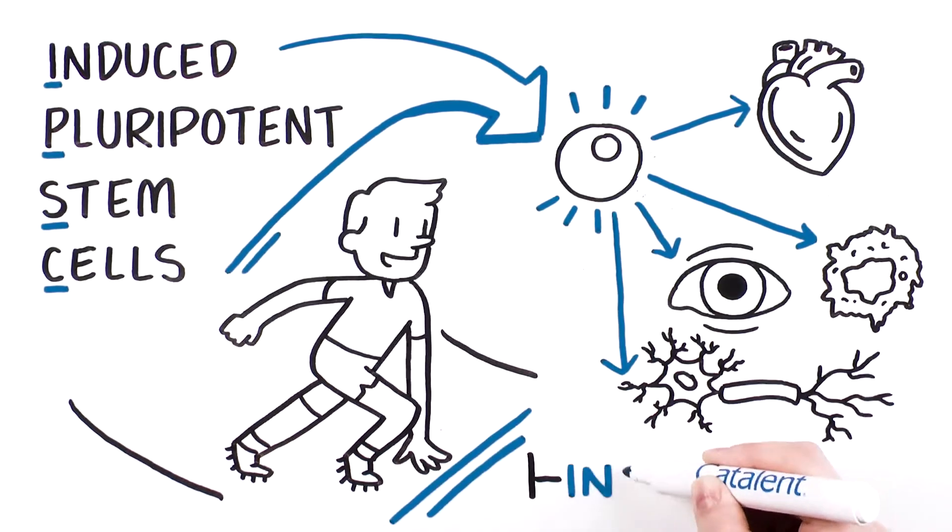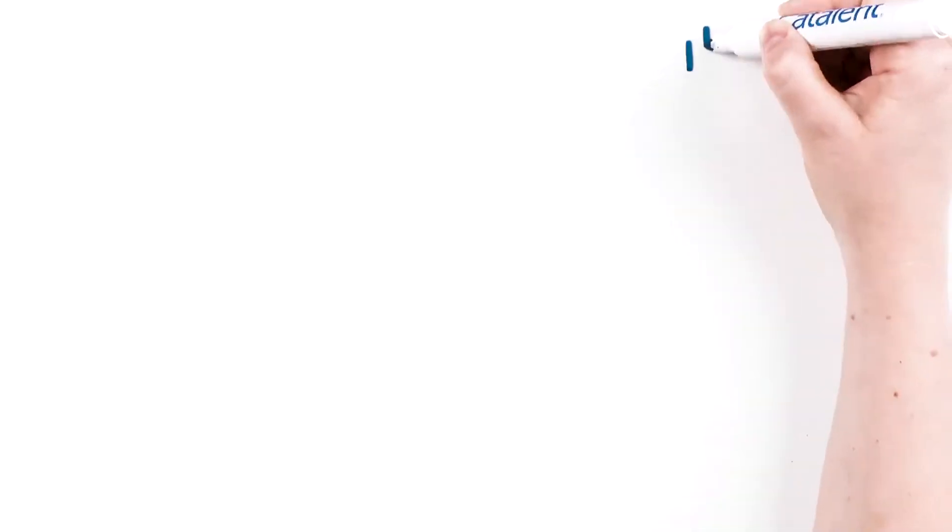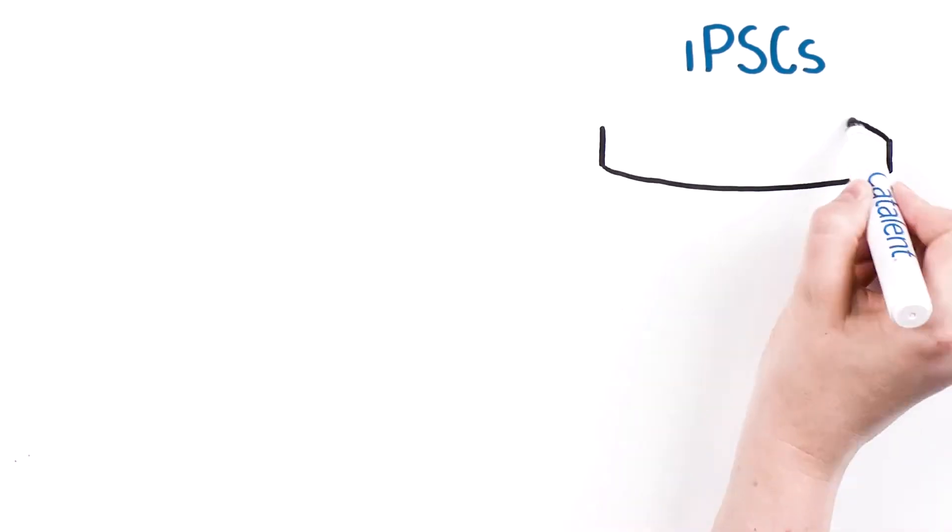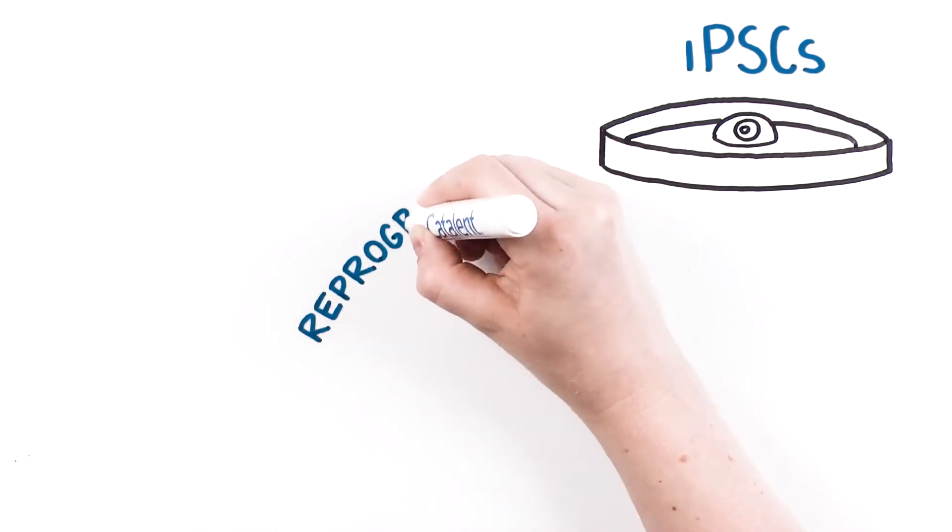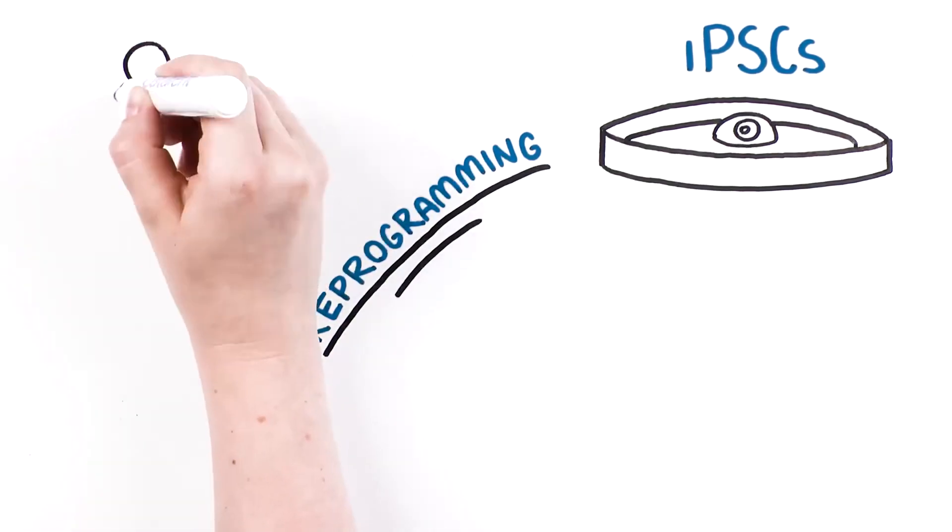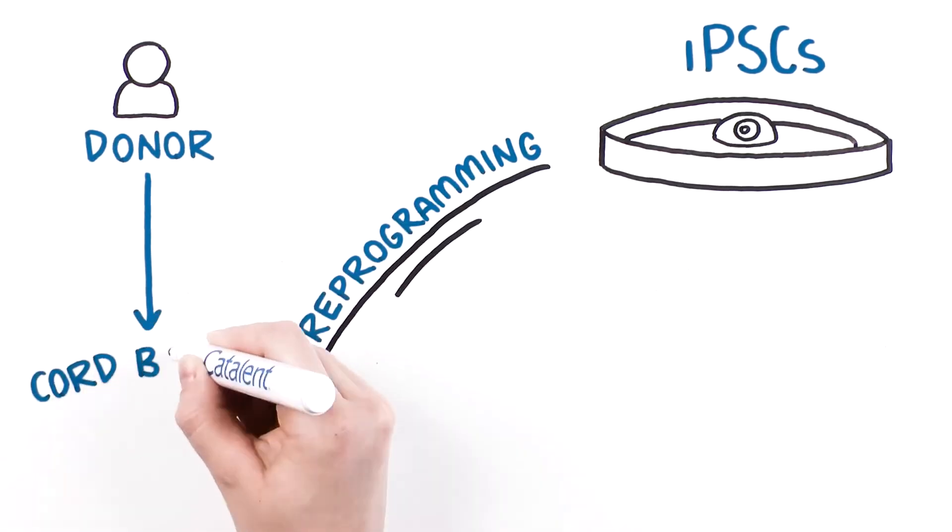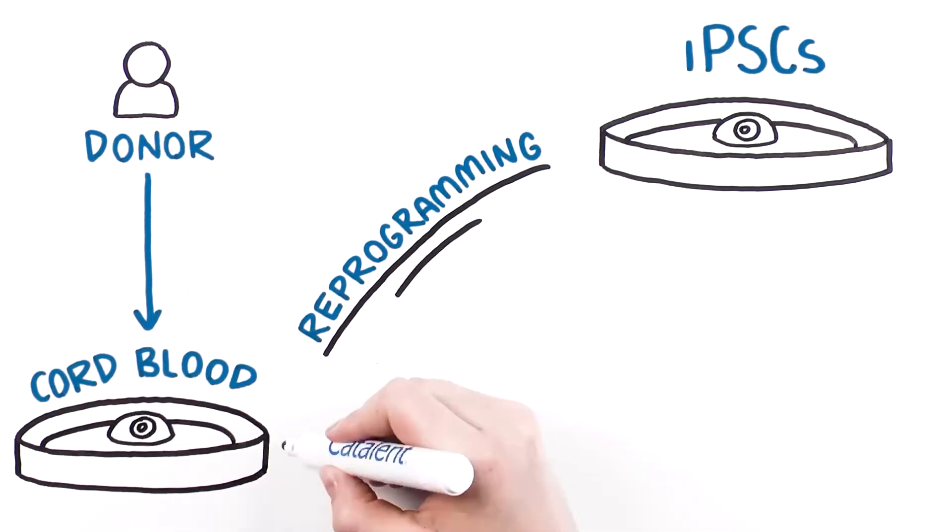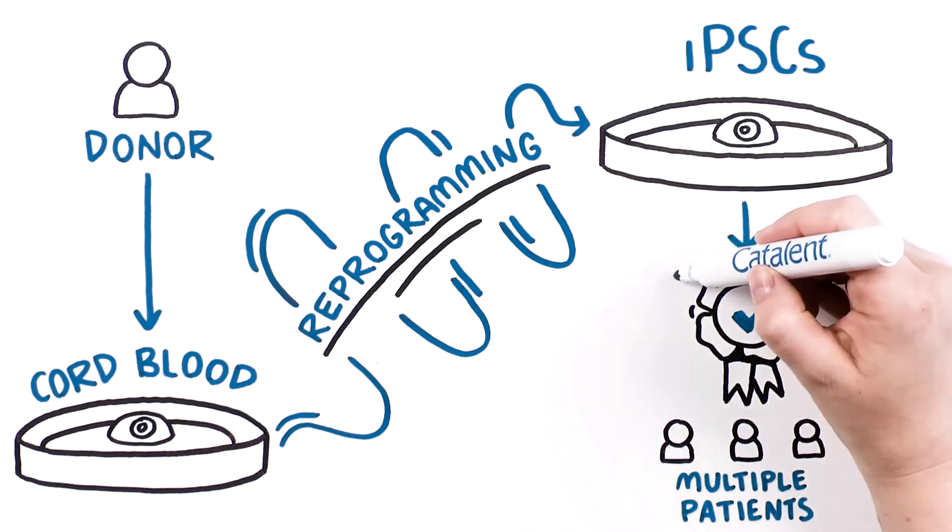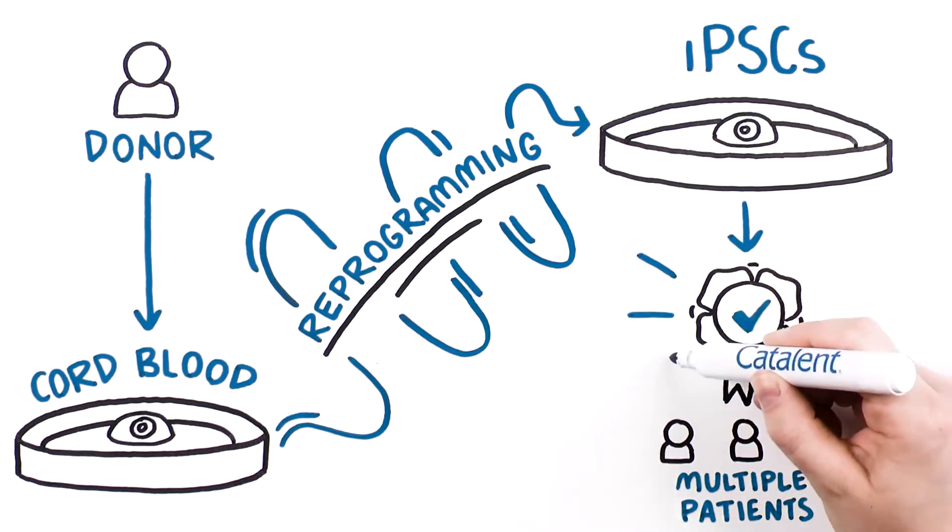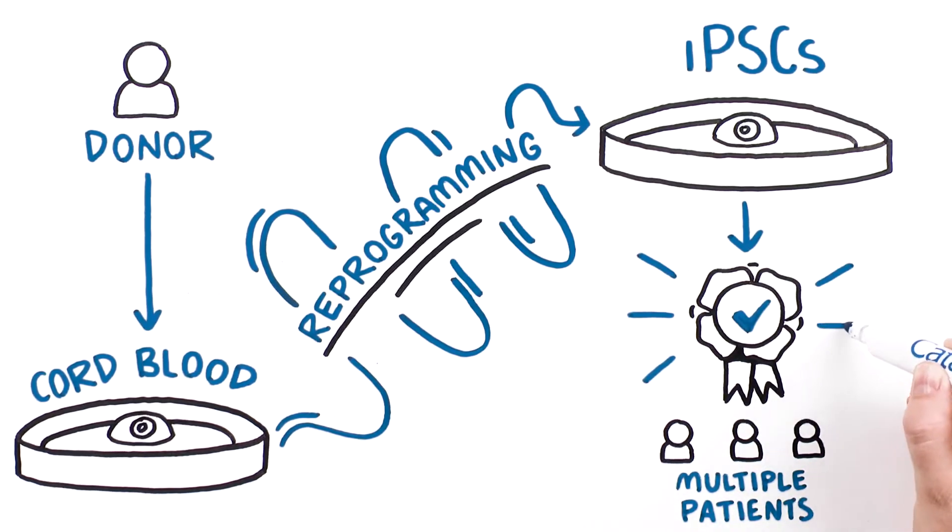Making them an ideal universal source for therapies addressing a range of indications. To create commercial-use GMP IPS cell banks, including off-the-shelf banks, Catalent utilizes specialized reprogramming technology to transform donor-reconsented, clinically-approved cord blood collections into HLA homozygous lines that are immune-compatible with multiple patients. Our GMP-compatible differentiation protocols provide options to transform the IPSCs into the cell types needed to develop therapies for targeted diseases.